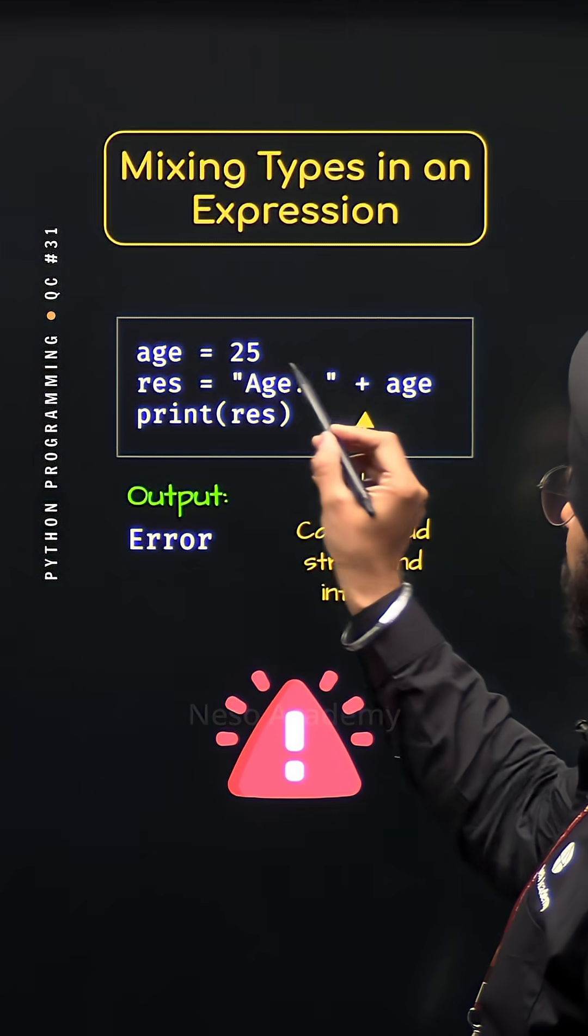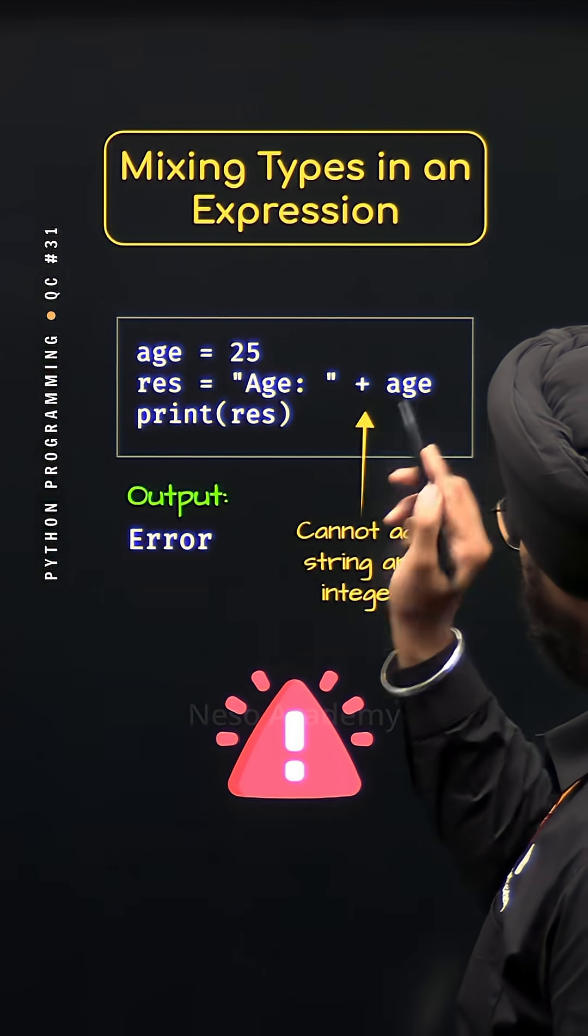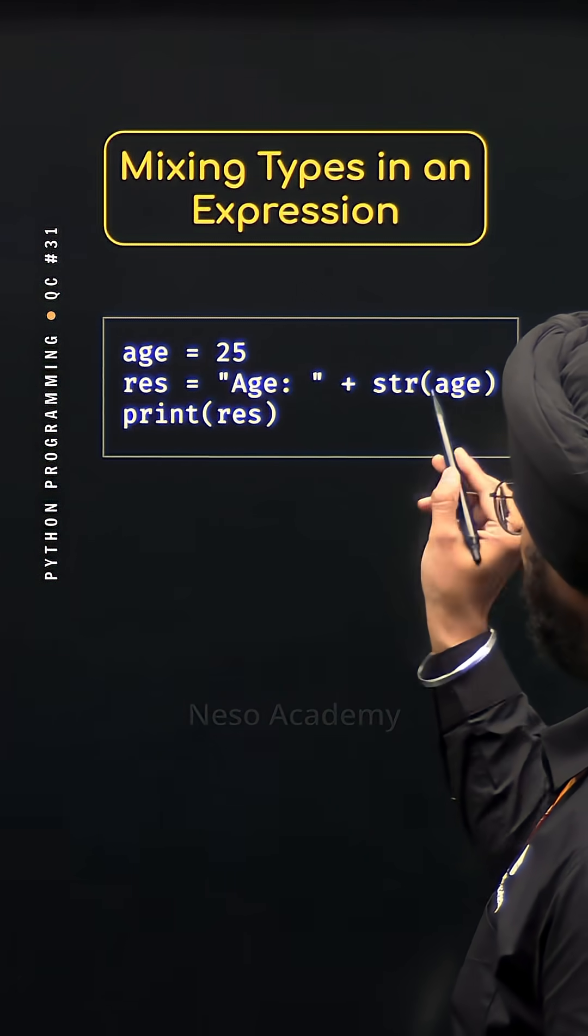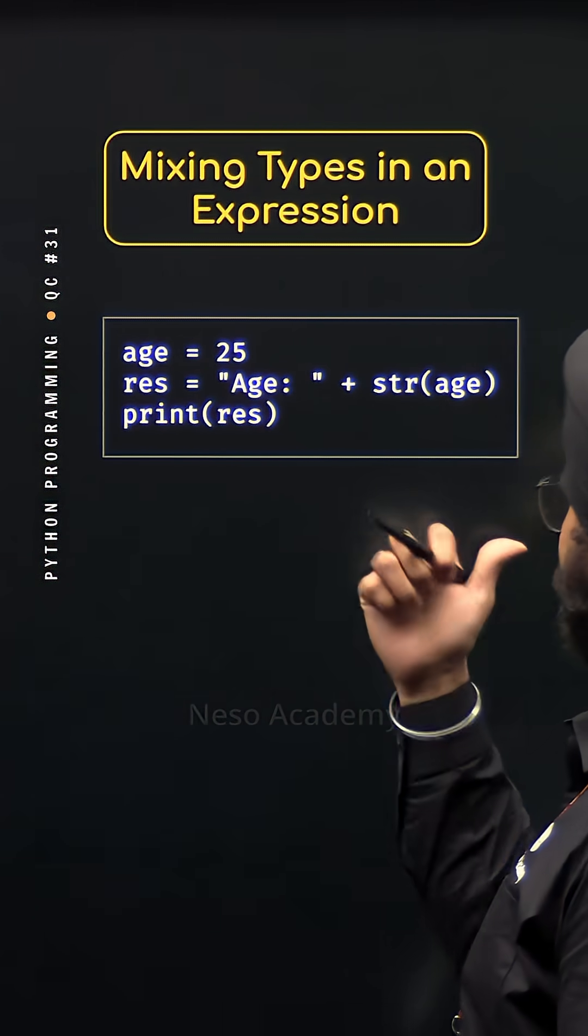We can change the type of this value to a string with the help of str function like this. This is called explicit typecasting because we are changing the type of this value to some other type.